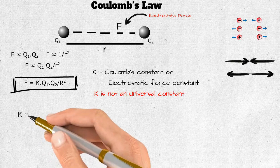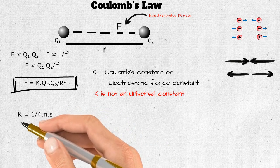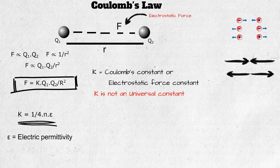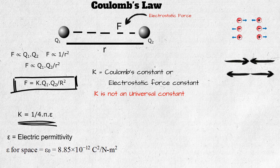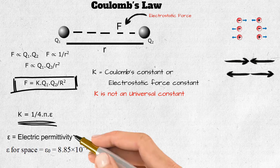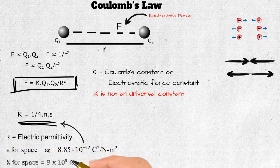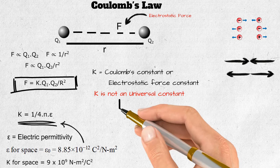k equals 1 / (4π·ε), where ε is called electric permittivity and its value is different for different mediums. ε for free space is represented by ε₀ and its value is 8.85 × 10⁻¹² C² per N·m². On putting the value of ε for free space into the formula for k, we get k for space equals 9 × 10⁹ N·m² per C².